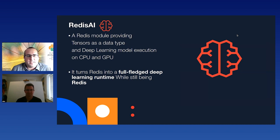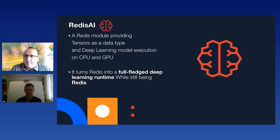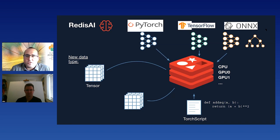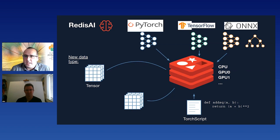Next we have RedisAI. RedisAI is a Redis module that exposes a new data structure — a tensor data type — enabling deep and machine learning model execution on CPU and GPU, making Redis like an inference server for several machine learning frameworks. Inside RedisAI, Redis embeds PyTorch, TensorFlow, and the ONNX Runtime framework for model execution. It also supports TorchScript for script execution in PyTorch, supports multiple devices including CPU and GPU, and takes tensors as input and returns them as output.